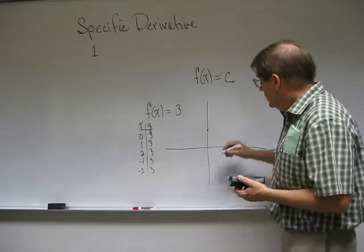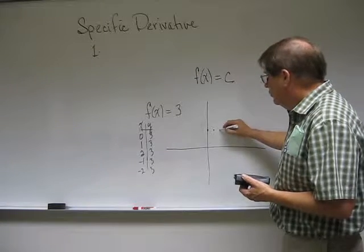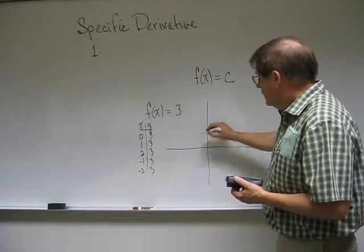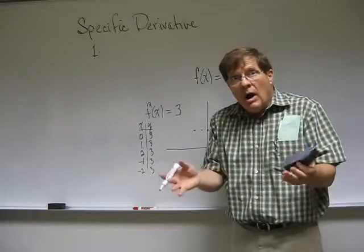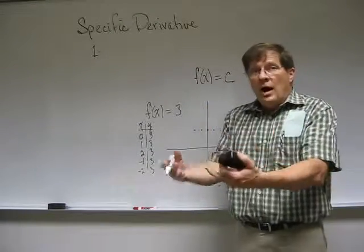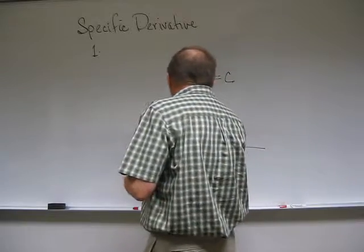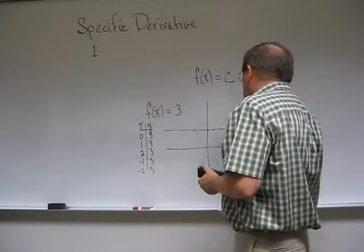0, 3; 1, 3; 2, 3; minus 1, 3; minus 2, 3; and so on. No matter what x you pick, the y value is going to be 3, and the graph begins to look like this. It's a straight line.